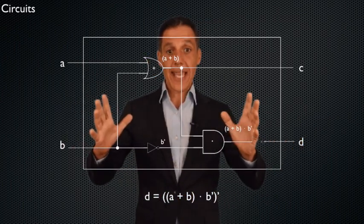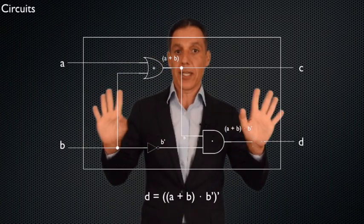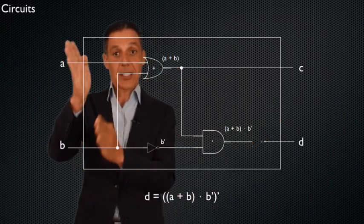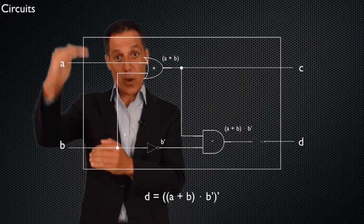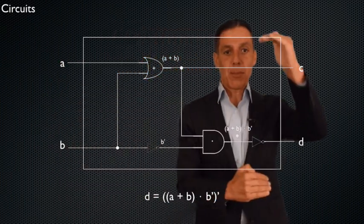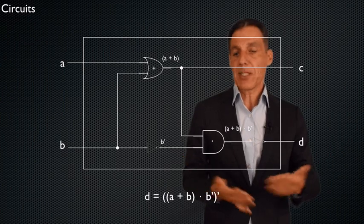What is a circuit? It's a collection of gates - OR, NOT, AND - that's all I can do, that takes a series of binary inputs, one or more, and outputs a series, one or more, of binary outputs. That's a circuit.